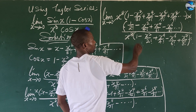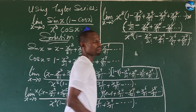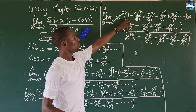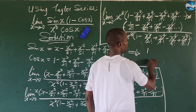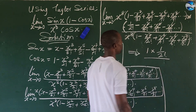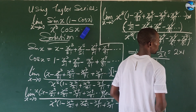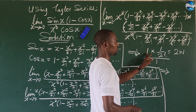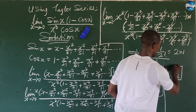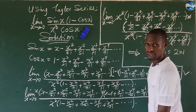In the second bracket of the numerator, as x approaches zero, the terms with x also go to zero, leaving one all over two factorial. At the denominator, all the x terms go to zero, leaving just one. So we have one times one all over two factorial, which is one times one all over two — giving us one all over two as our answer. Using the Taylor series to find the limit of this function, the answer is one half.